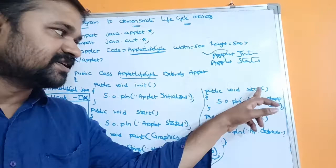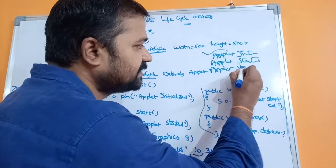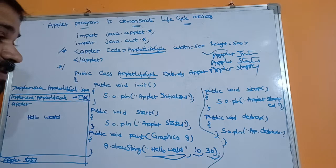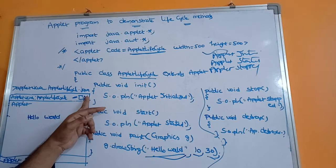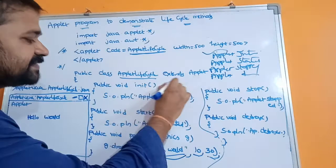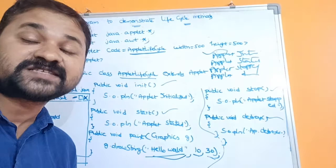Whenever we click the cross mark, the stop method will first get executed, so 'Applet stopped' will be printed in the command prompt. If you click the minus button for minimization, the applet window will be minimized and the stop method will also get executed. When you click the cross mark to close, first the stop method executes, then the destroy method executes, and 'Applet destroyed' is printed. In this way we can demonstrate applet lifecycle methods.